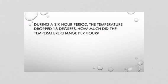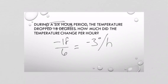We know it dropped 18, so that's a negative 18, over a six-hour period, so divide it by six. And we get negative three, which means it dropped three degrees per hour.